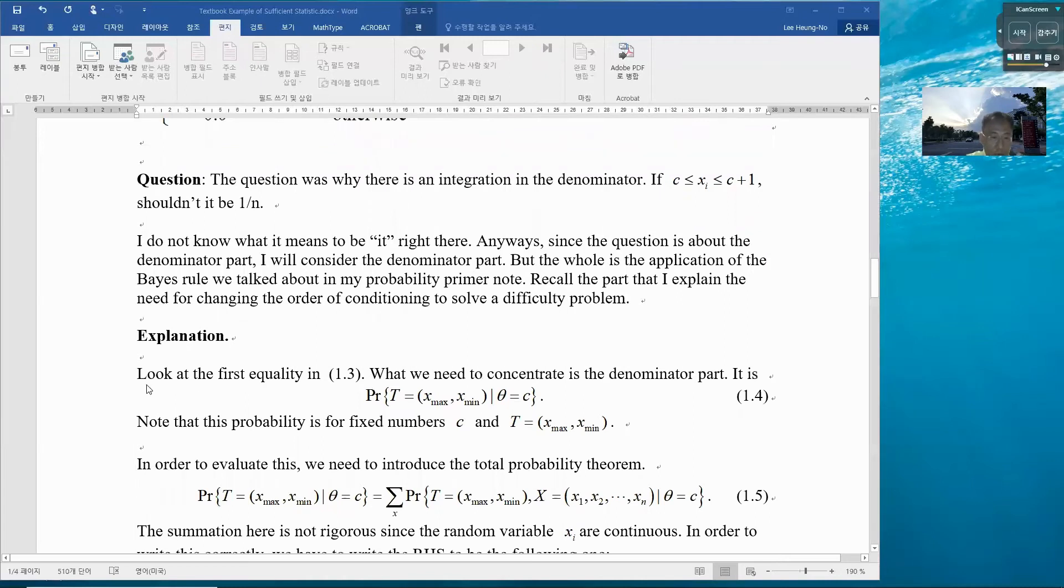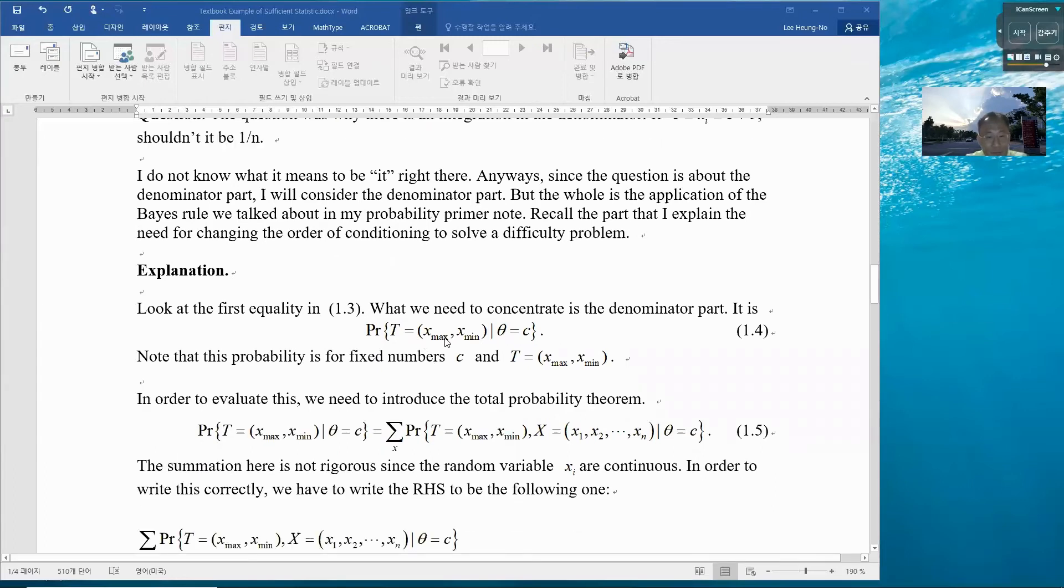Here is my explanation. Look at the first inequality in 1.3. The part that I want to concentrate is the denominator part, that is this one: probability of sufficient statistic given to be a certain number given theta equals to c. Here, x_max, x_min are just numbers. Theta is also a number. What is missing here is X, the random variable X. But in order to evaluate this, I need to have X included in the expression.